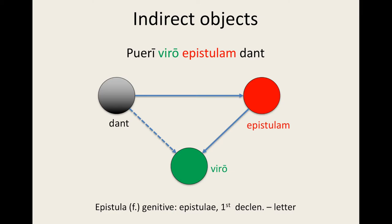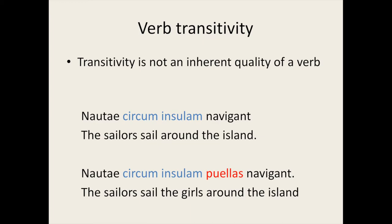It's very important to understand that transitivity is not a property inherent to a verb, but rather one which describes its use in a specific instance. Take, for example, these two sentences: 'Chris grows flowers in the garden' and 'Chris grows taller every year.' We have the same verb and the same subject. However, in the first sentence, the verb 'grows' has a direct object, 'flowers', so it's transitive. In the second sentence, 'grows' does not have an object — 'taller' is a comparative adjective describing Chris — hence the verb is intransitive.